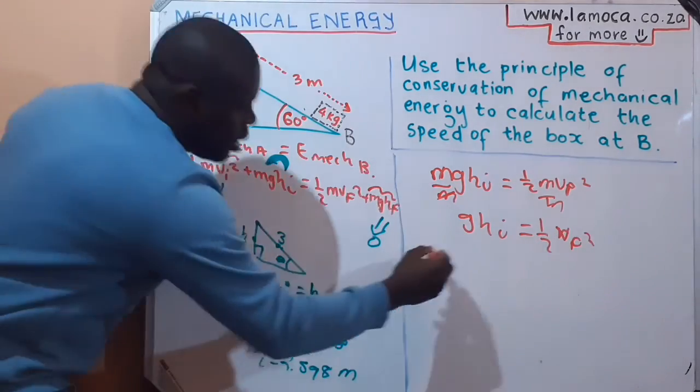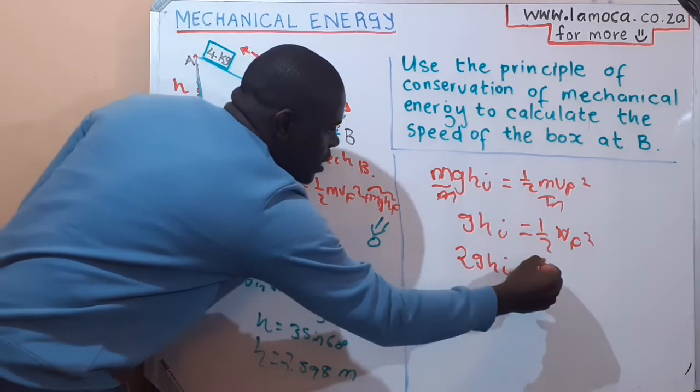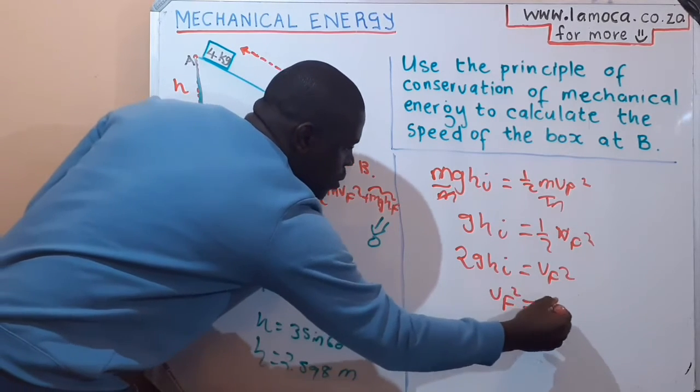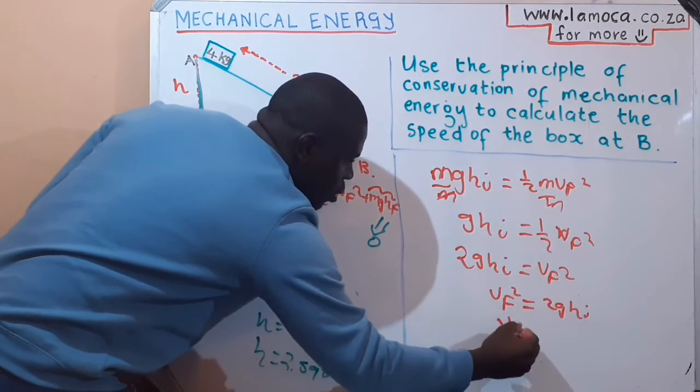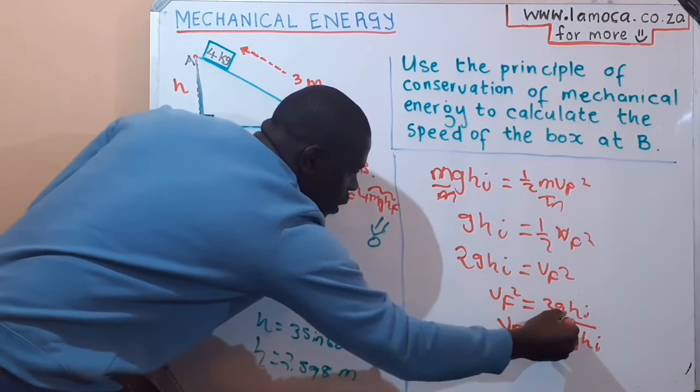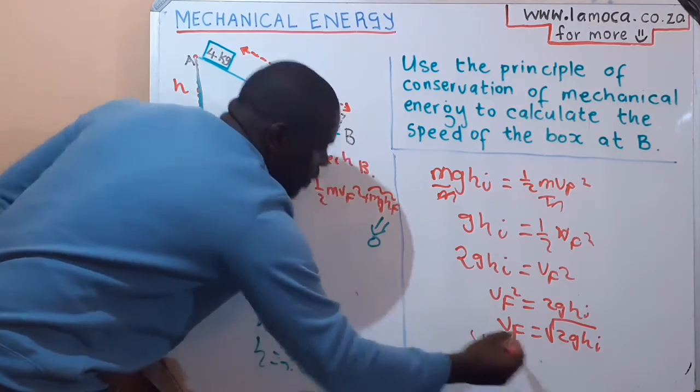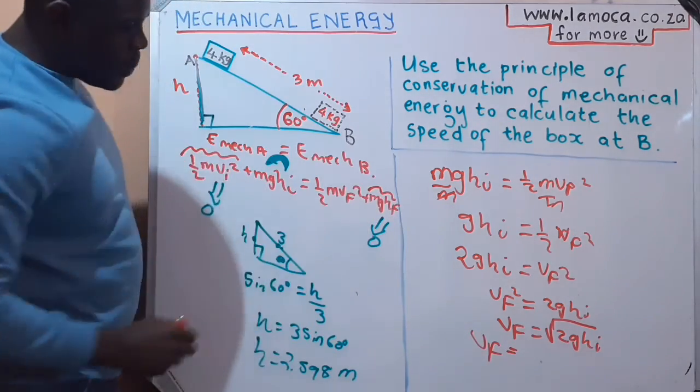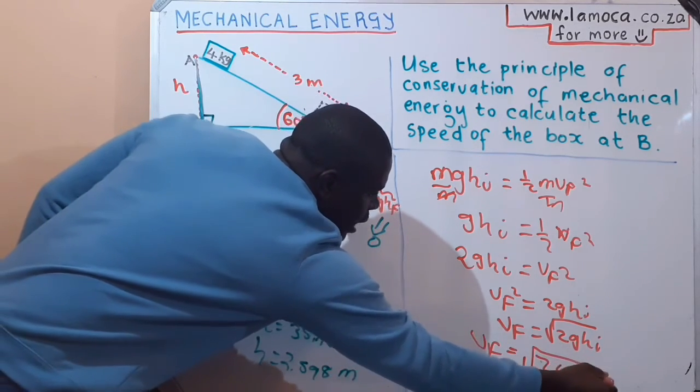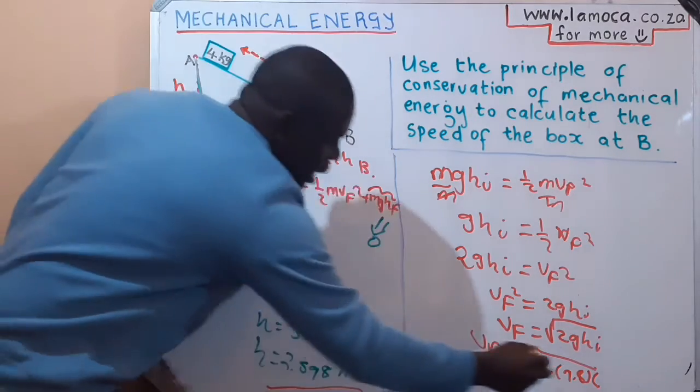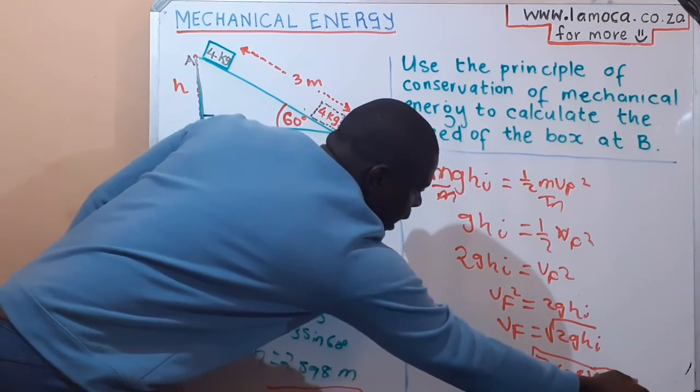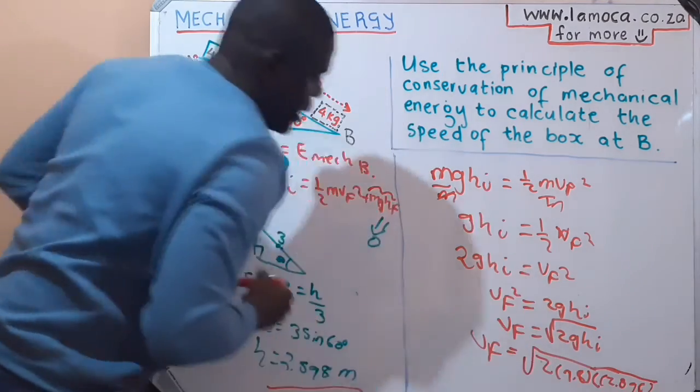Doubling everything, we are left with 2gh_i = v_f². But we're looking for v_f, so v_f² = 2gh_i. We take the square root on both sides. We are left with √(2gh_i). So what is our final velocity? We substitute √(2 × 9.8 × 2.598).